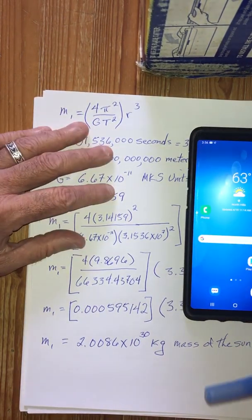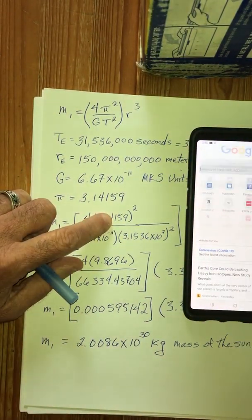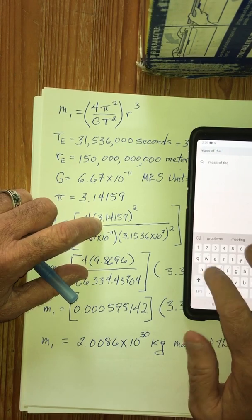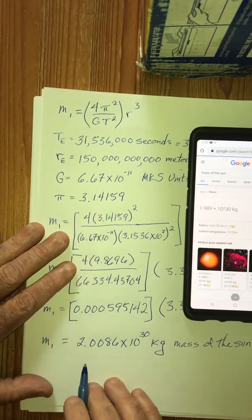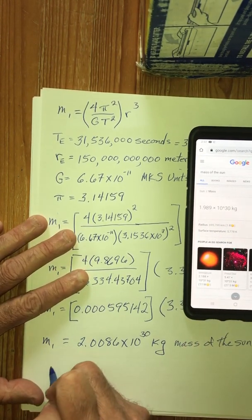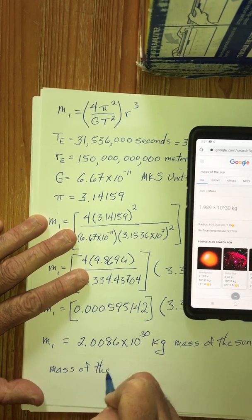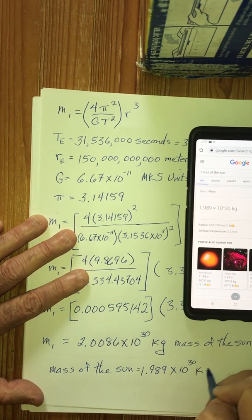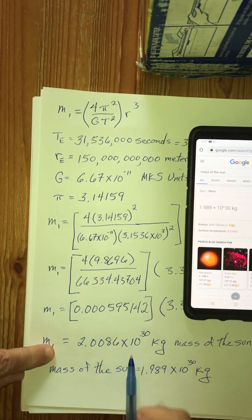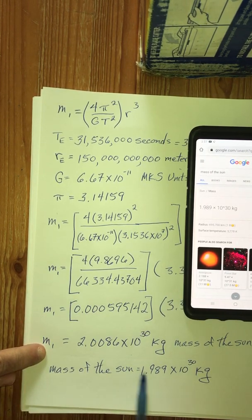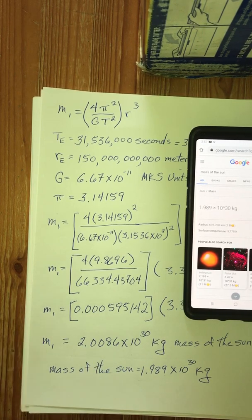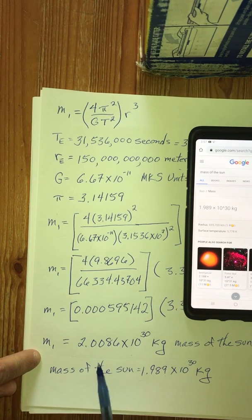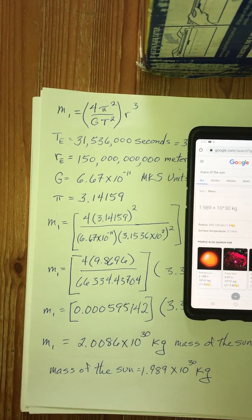Now let's compare that to what NASA says. This is basically what NASA says, that the mass of the Sun is 1.989 times 10 to the 30th kilograms. Check it out. That means that we're pretty close on both of those. 1.989 is pretty close to 2.0086. Both exponents are times 10 to the 30th. So using this formula, we were able to get an answer that was pretty close to the actual mass of the Sun. So we'll come back and discuss more of this later.